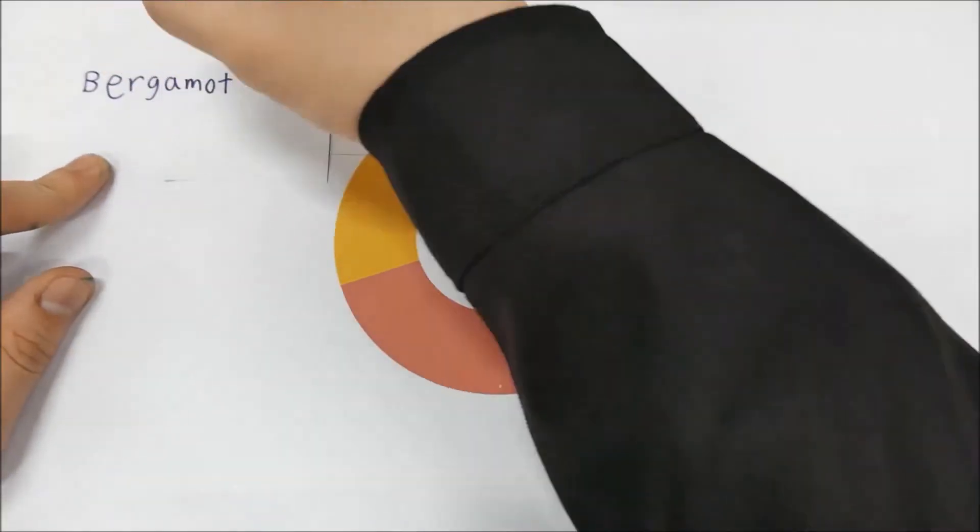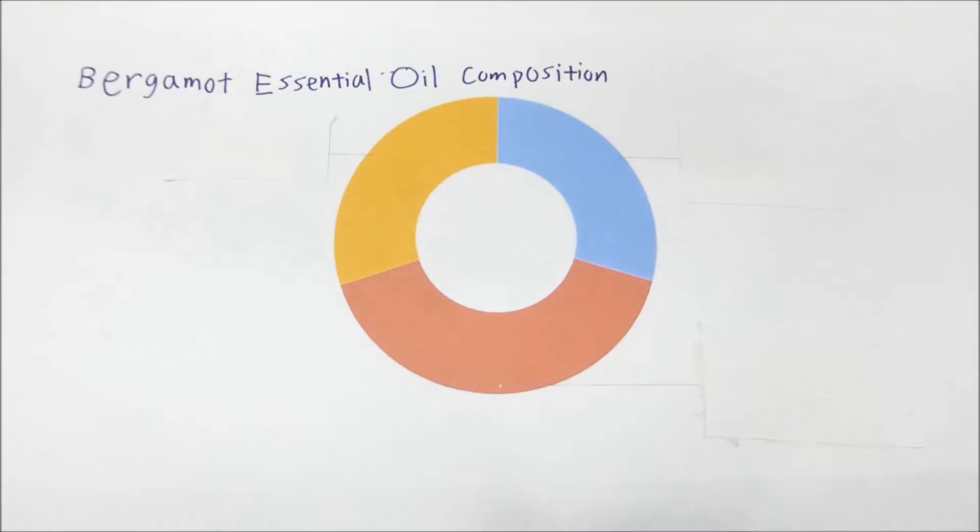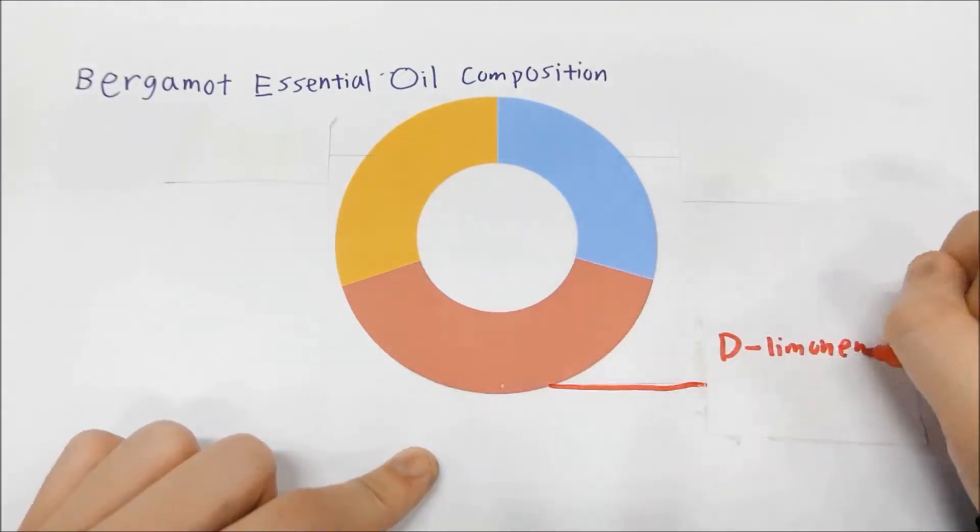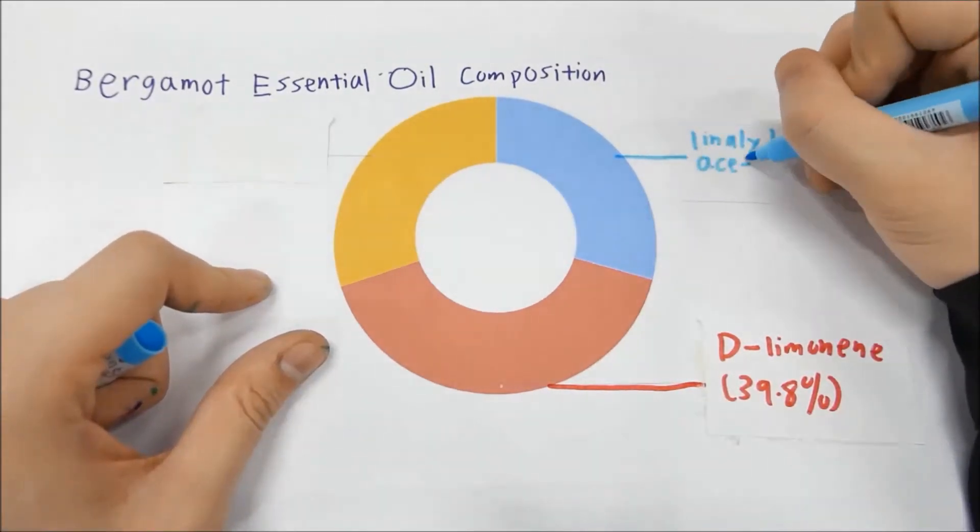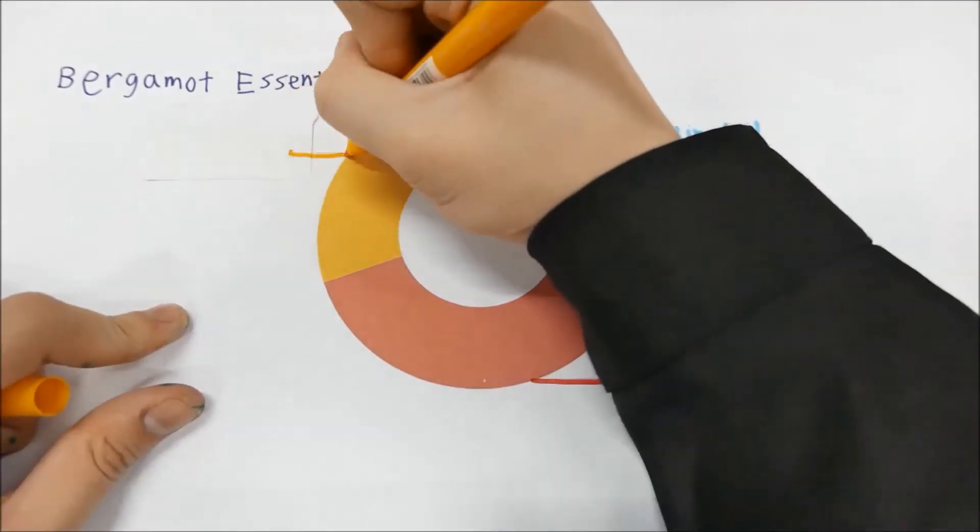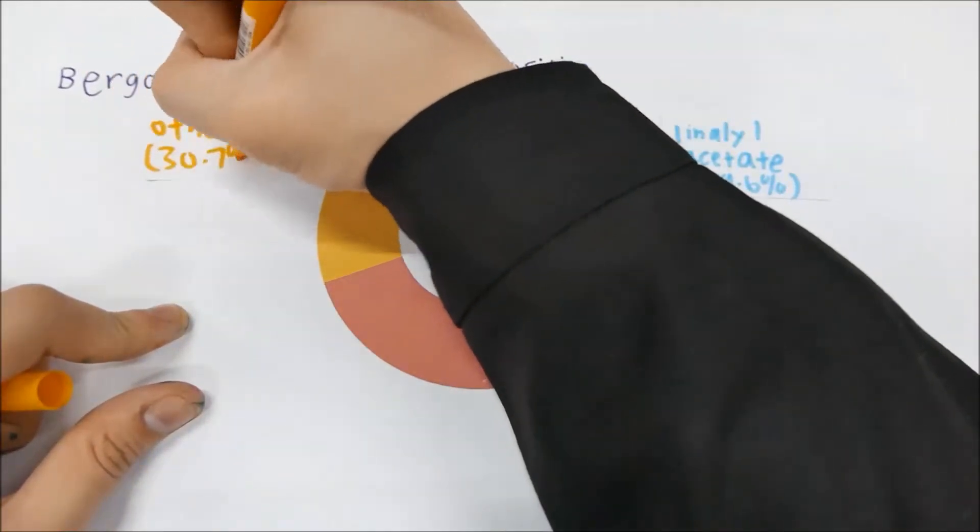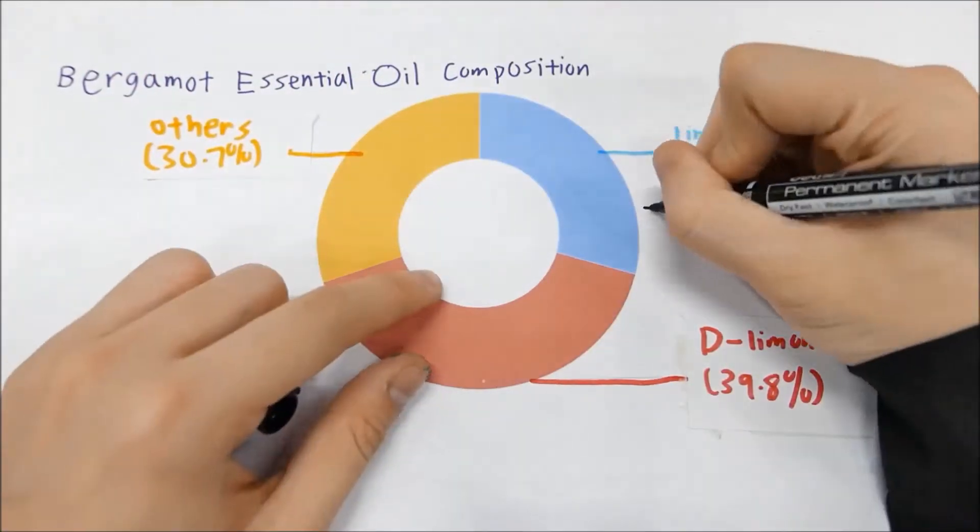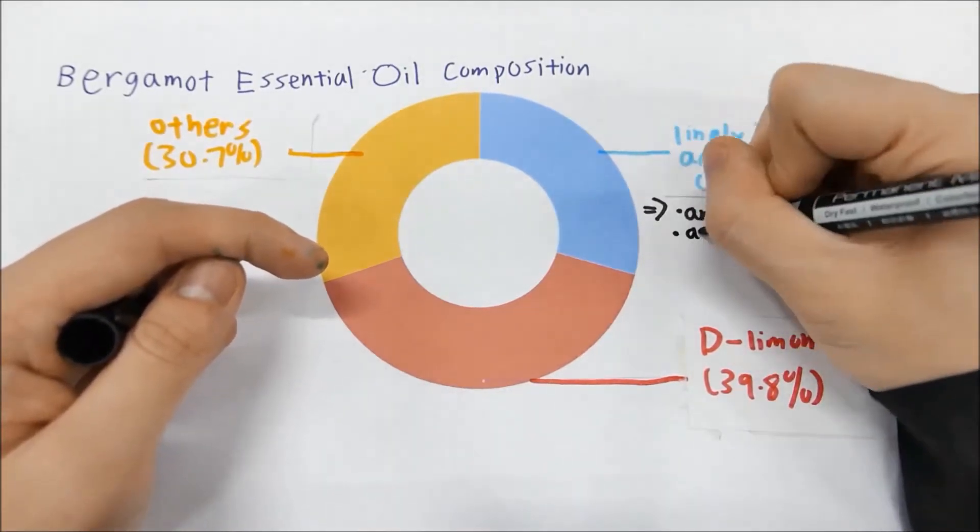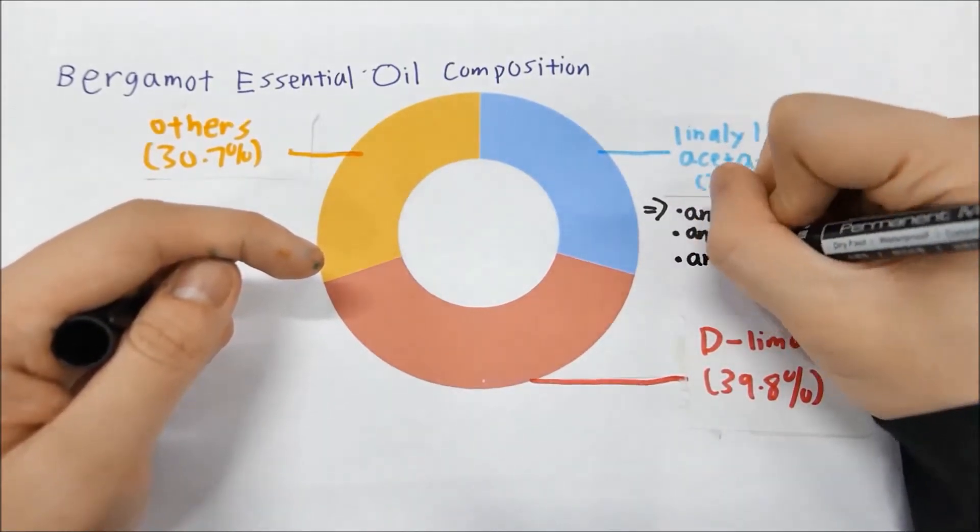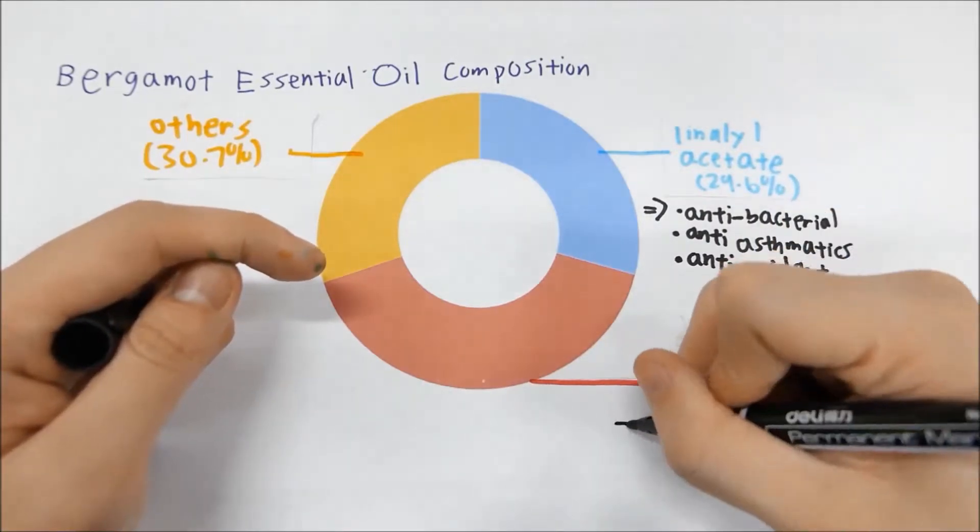Here is the breakdown of the compounds found in bergamot essential oil itself. As we can see, D-Limonene and Linalyl Acetate constitute more than half of the proportion of the compounds in bergamot essential oil. Like some of the compounds that exhibit health beneficial properties, D-Limonene and Linalyl Acetate are found to exhibit some of the health properties that we are looking for, such as anti-asthmatic and anti-oxidant effects.